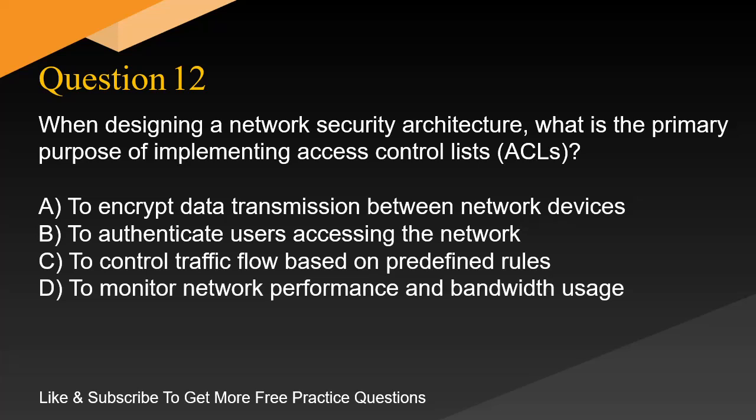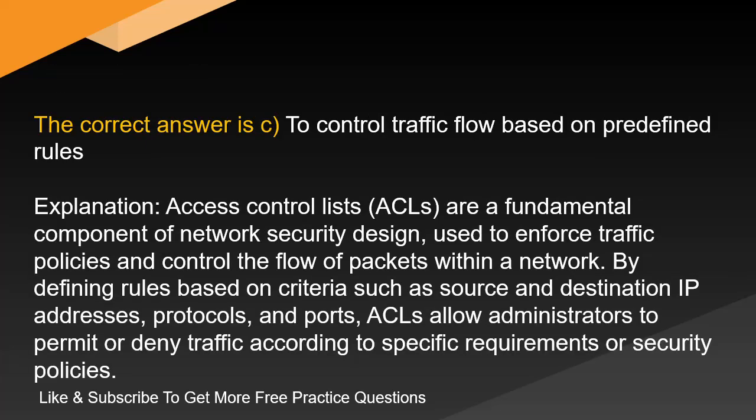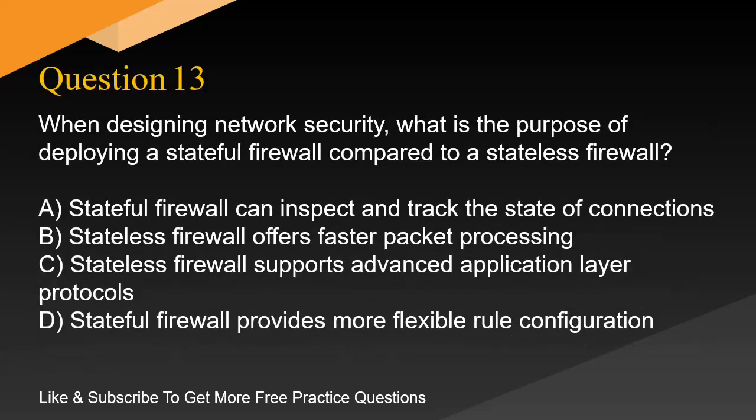Question 12. When designing a network security architecture, what is the primary purpose of implementing access control lists, ACLs? A. To encrypt data transmission between network devices. The correct answer is C: to control traffic flow based on predefined rules. Access control lists, ACLs, are a fundamental component of network security design, used to enforce traffic policies and control the flow of packets within a network. By defining rules based on criteria such as source and destination IP addresses, protocols, and ports, ACLs allow administrators to permit or deny traffic according to specific requirements or security policies.